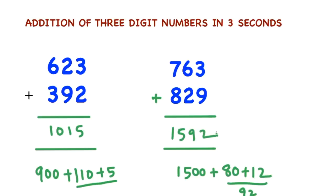In this way you can calculate addition of 3-digit numbers in 3 seconds. The only thing is you need to practice this type of problem so many times so that you will be familiar with this type of calculation and can do it in 3 seconds. I hope you understand this technique. Thank you.